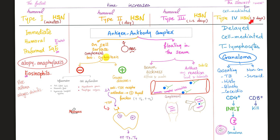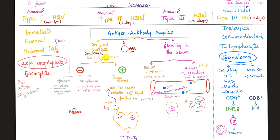Type 4 is the most delayed — about 72 hours. This is cell-mediated immunity. T-lymphocytes go and kill bacteria face-to-face. If they can kill the invader, they destroy it using cytotoxic T-cells. If they can't, they surround it in a granuloma. Granulomas can have caseous necrosis, as in tuberculosis, histoplasmosis, blastomycosis, and coccidioidomycosis. Non-caseating granulomas include sarcoidosis. CD4 T-lymphocytes secrete interferon-gamma, which stimulates macrophages to make the granuloma.